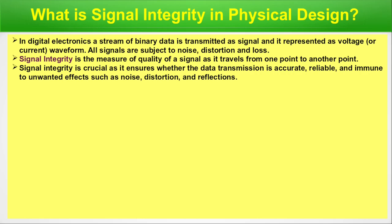In digital electronics, not exactly a single voltage value is considered state one or state zero — there is a band of voltage. If the voltage remains within a certain range we call it zero state, and if it's above some certain value and below another, that is another band of values, we call it state one. When a signal in a realistic world goes through noise, distortion, and reflections, its value gets changed. Suppose due to noise a state one is transmitted and value degradation happens — it becomes below a certain level, so it will be considered state zero. It's very important to analyze signal integrity issues to ensure quality of transmitted data.